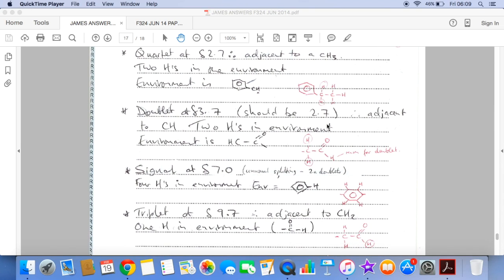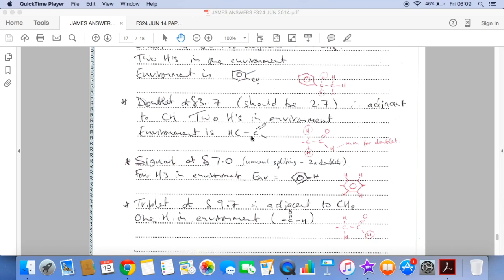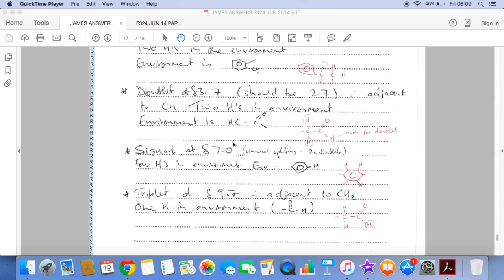So the funny one now, the doublet at 3.7, that should be at 2.7. So that corresponds with this kind of environment, H to C. It's a C double bond O. Now the fact that it's a doublet means it's adjacent to a CH and there are two hydrogens in the environment.